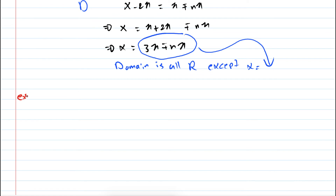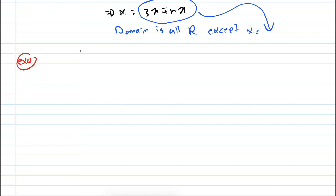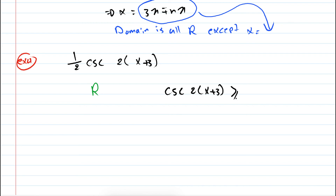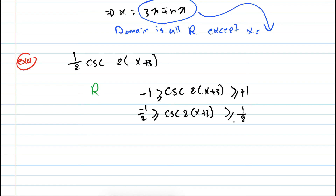Let me give another example with cosecant. Example 4: problems for cosecant and secant are very similar. Suppose we have (1/2)·cosecant of (2x plus 3), and we're asked to find the domain and range. For the range: cosecant of (2x+3) is either ≥ 1 or ≤ -1. Multiplying by 1/2, the range is all values ≥ 1/2 or ≤ -1/2.